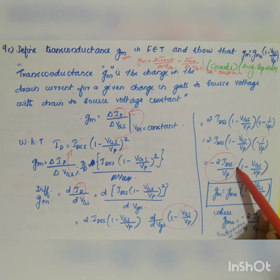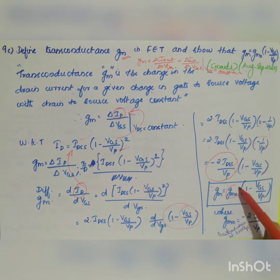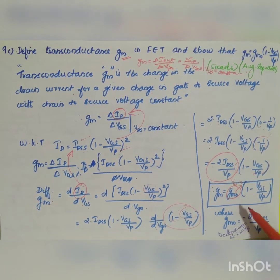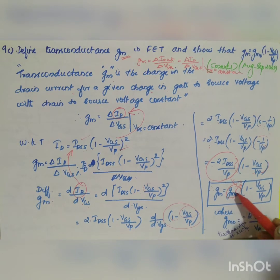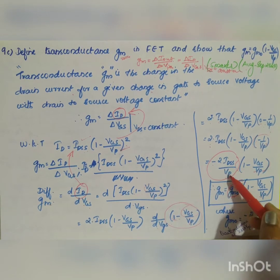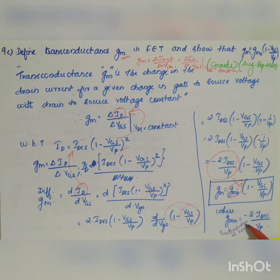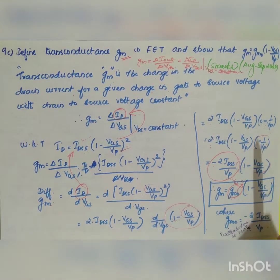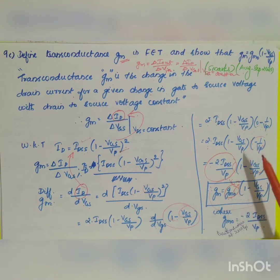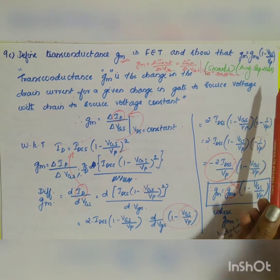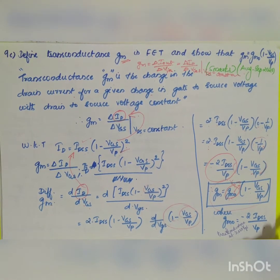Taking minus 2 idss divided by vp as gm0, which is the transconductance at vgs equal to 0, we get gm equals gm0 into (1 minus vgs divided by vp), where gm0 equals minus 2 idss divided by vp. This completes the 5-mark explanation for transconductance and the derivation of gm equals gm0 into (1 minus vgs/vp).